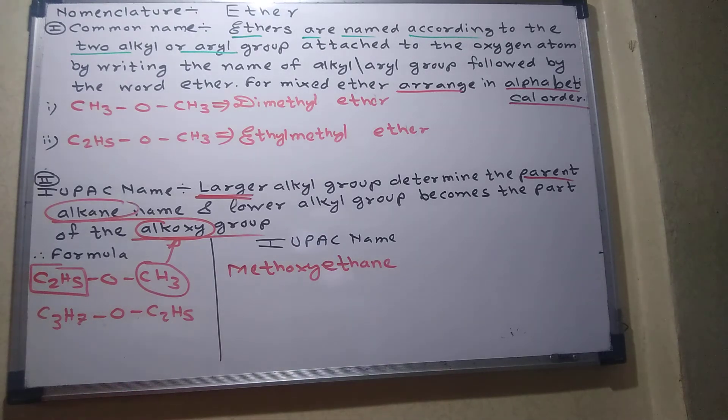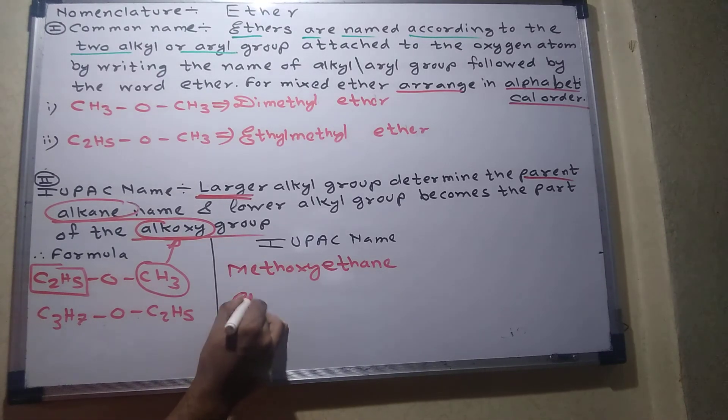Now let's see. Which group has more carbon? Left. So that becomes alkane. So what name when three carbons are there? Propane. And ethoxypropane. Don't you understand? Ethoxypropane.